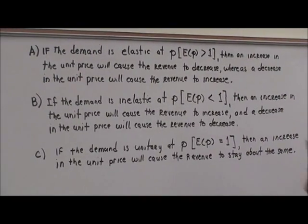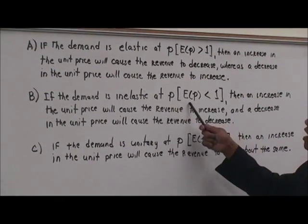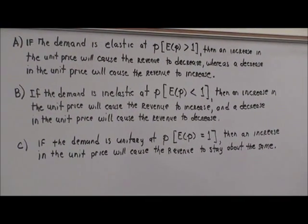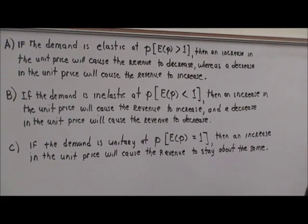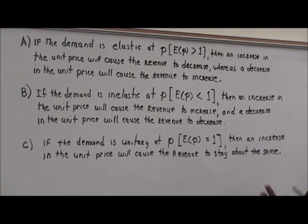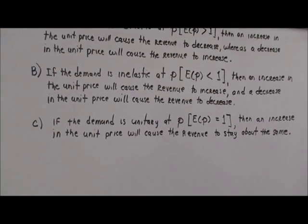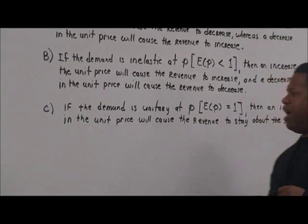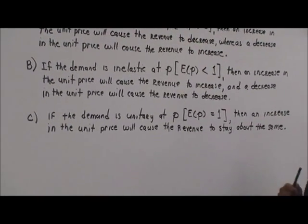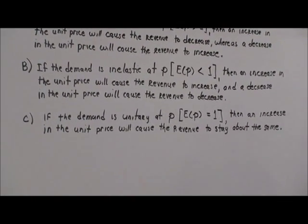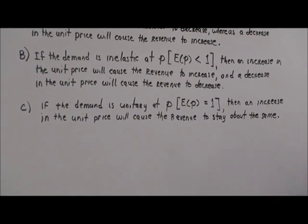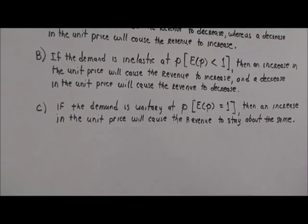If the demand is inelastic at P and E of P is less than one, then an increase in the unit price will cause the revenue to increase. And if the demand is unitary at P, where E of P equals one, then an increase in the unit price will cause the revenue to stay about the same.